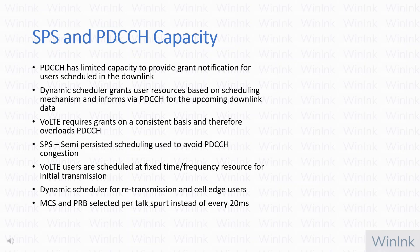MCS and PRB are also selected per talk spurt rather than the 20-millisecond time period used in LTE. PDCCH is a scarce resource in LTE. One significant feature of LTE at launch was its dynamic scheduler with downlink and uplink grants based on radio link conditions and corresponding MCS. However, this same feature becomes a bottleneck when deploying Voice over LTE, as the user has to be scheduled on a permanent basis, resulting in consistent PDCCH usage. QCI-1 and QCI-2 for voice and video are guaranteed bit rate services and get preference over non-GBR data traffic, which can result in no throughput for non-VoLTE users when PDCCH is congested.